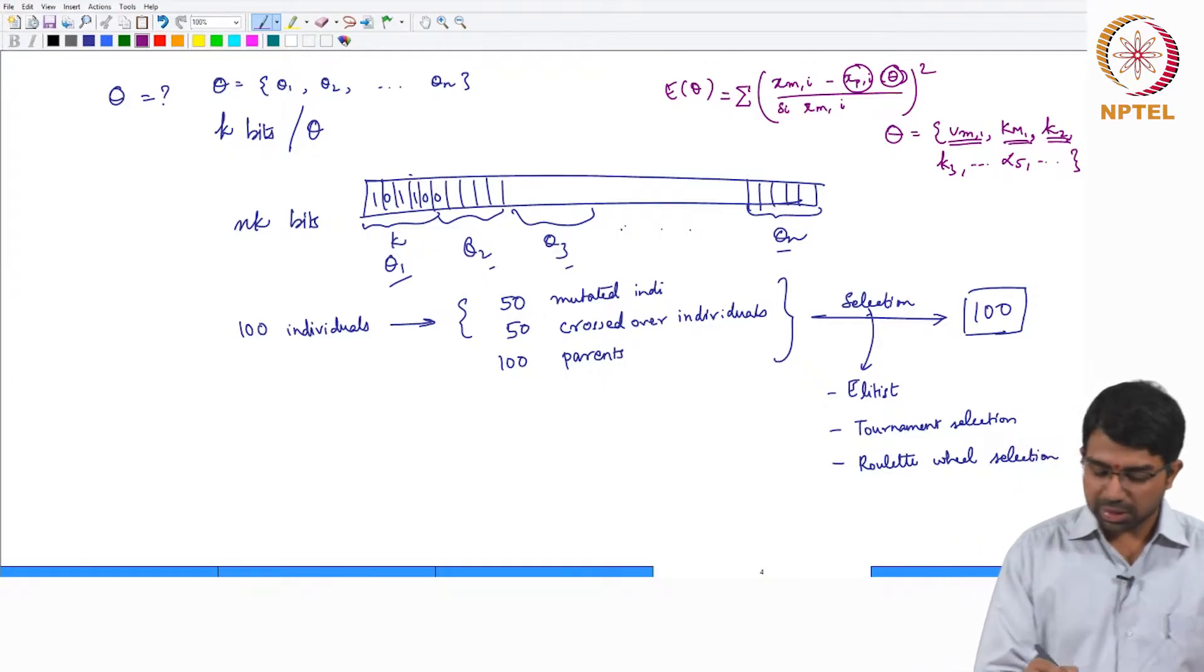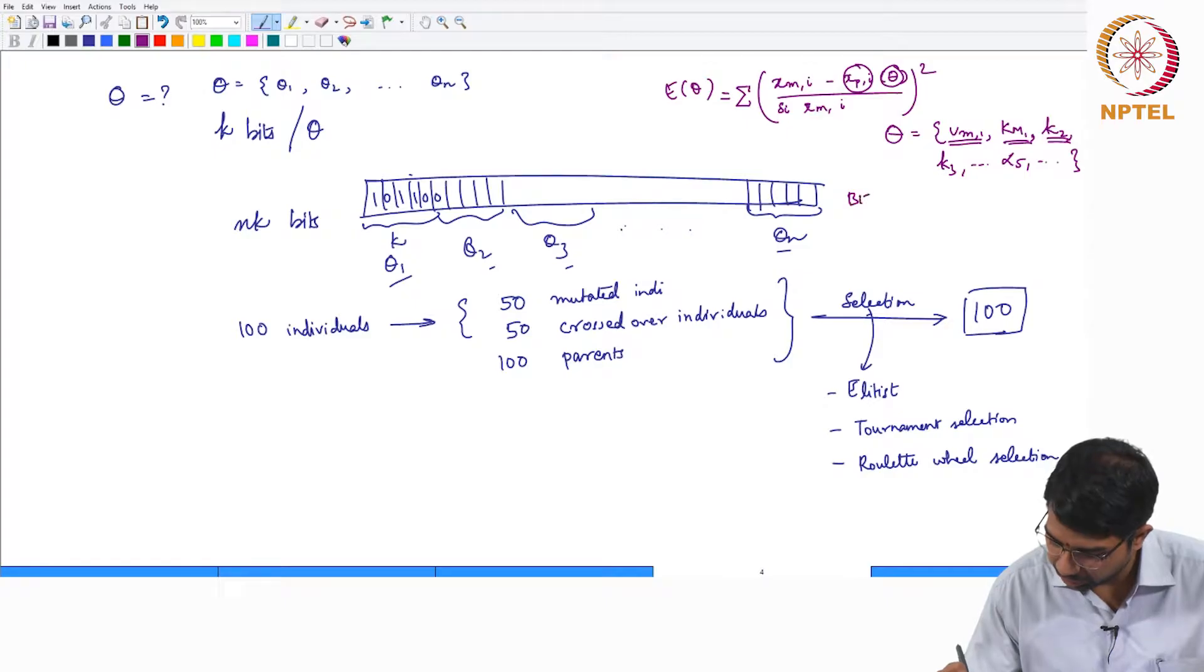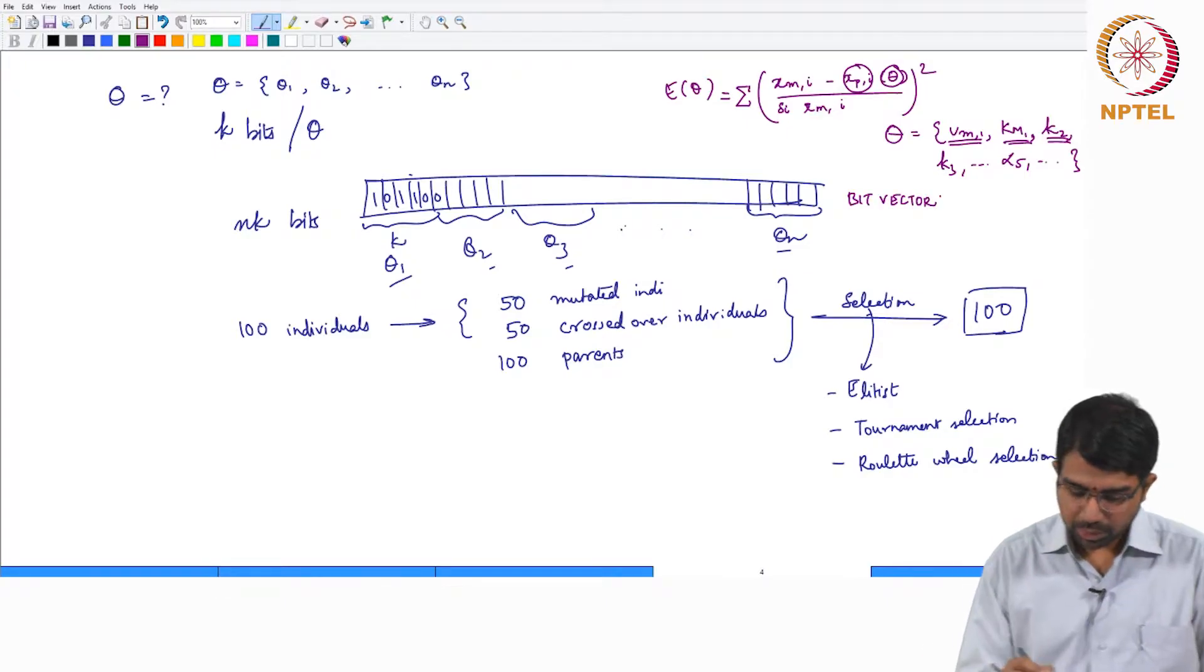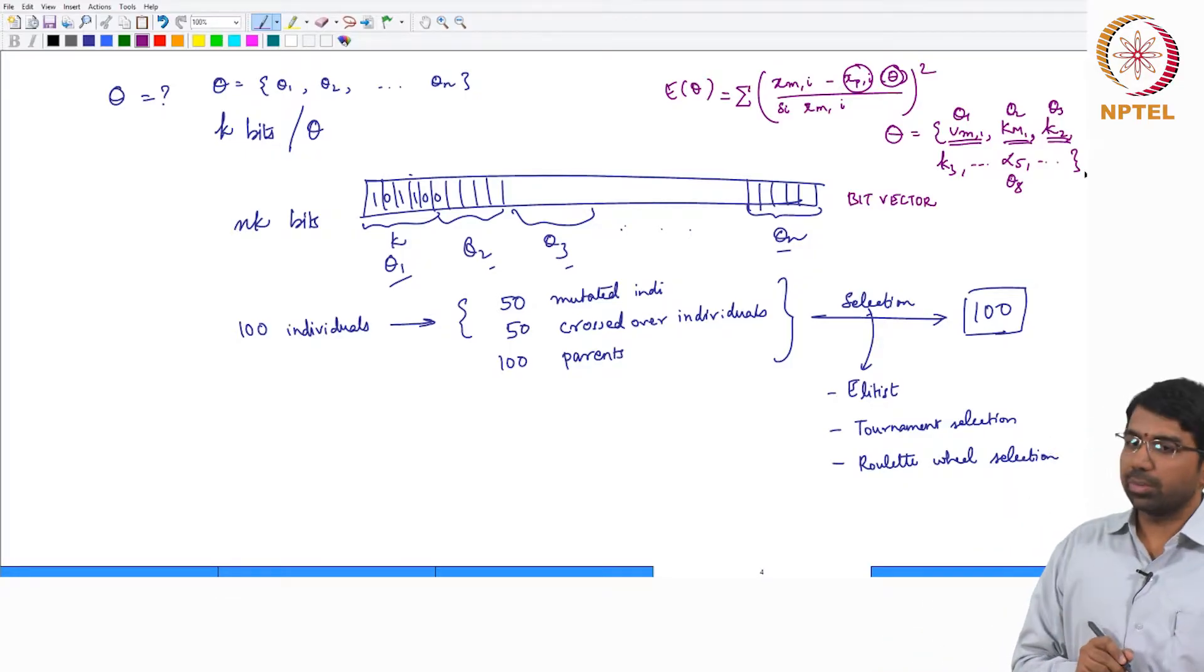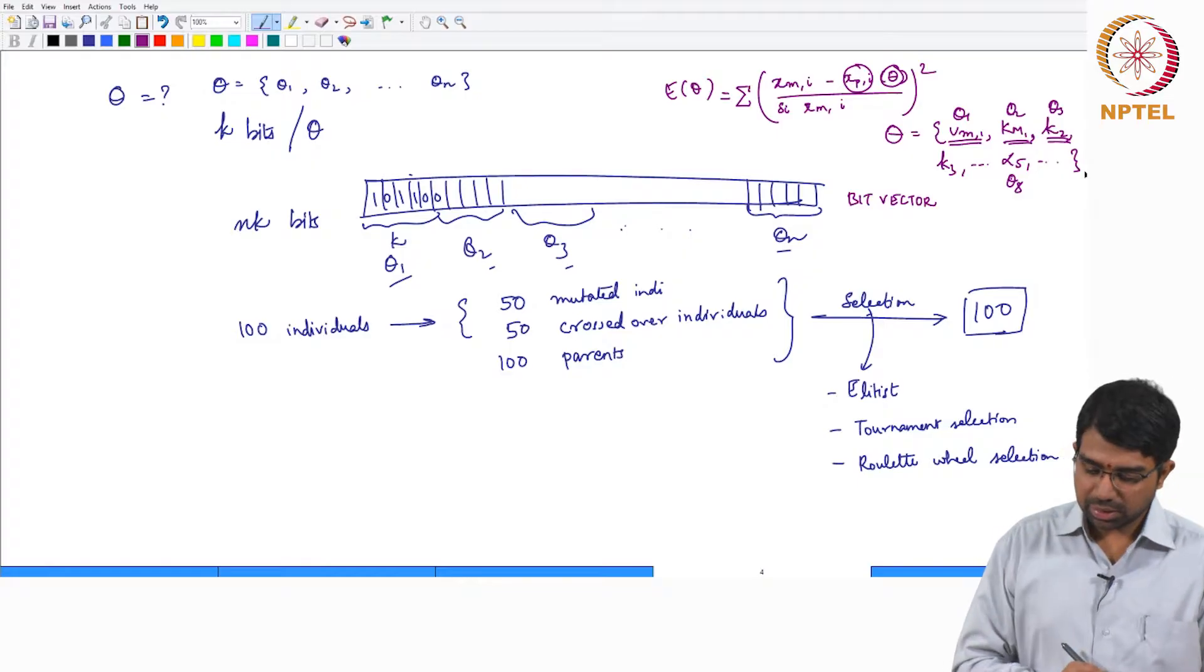Now you can think of sticking them into a vector, a bit vector where you are contiguously putting in theta1, theta2, theta3, and so on. This is theta1, this is theta2, this is theta3, this could be theta 8 and so on. How many parameters are there in the system? Let us say you have n parameters in the system and you just put them all next to each other.